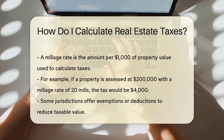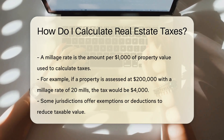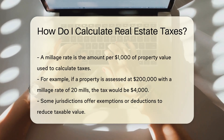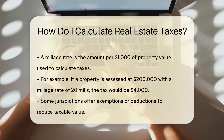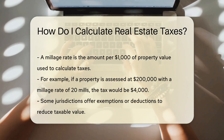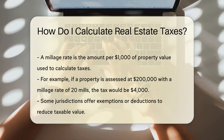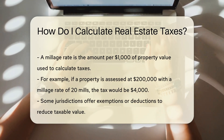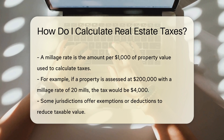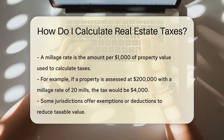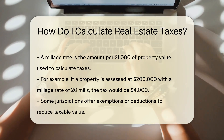For example, if your property is assessed at $200,000 and the millage rate is 20 mills, your tax would be $4,000. Some jurisdictions may offer exemptions or deductions, which can reduce the taxable value of your property.